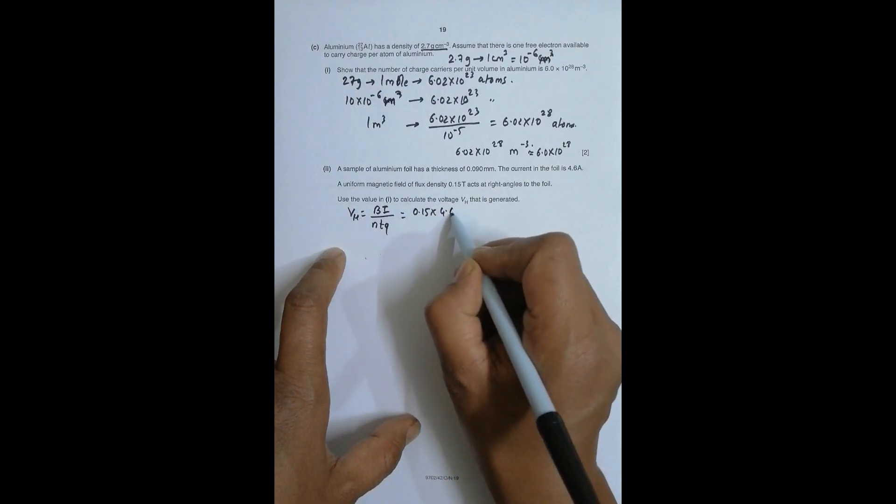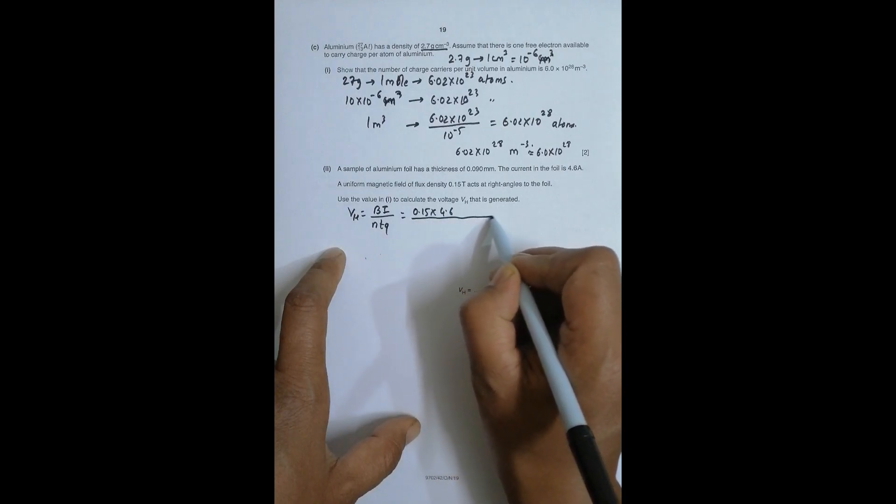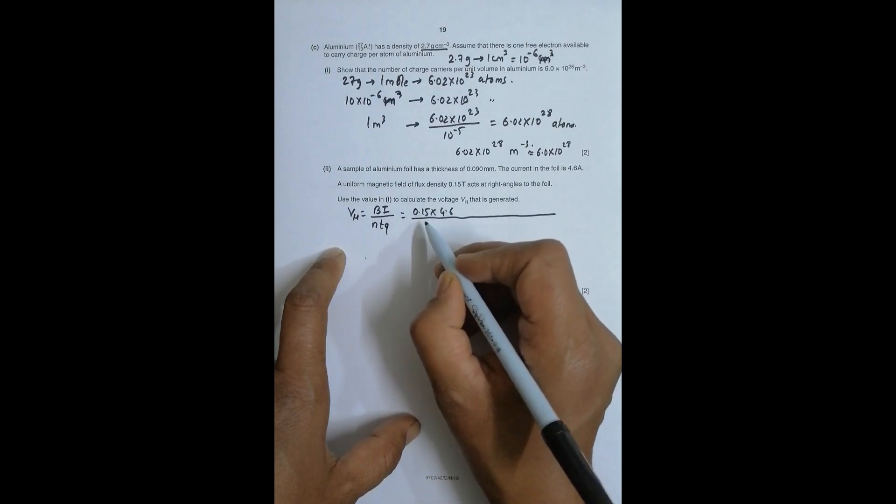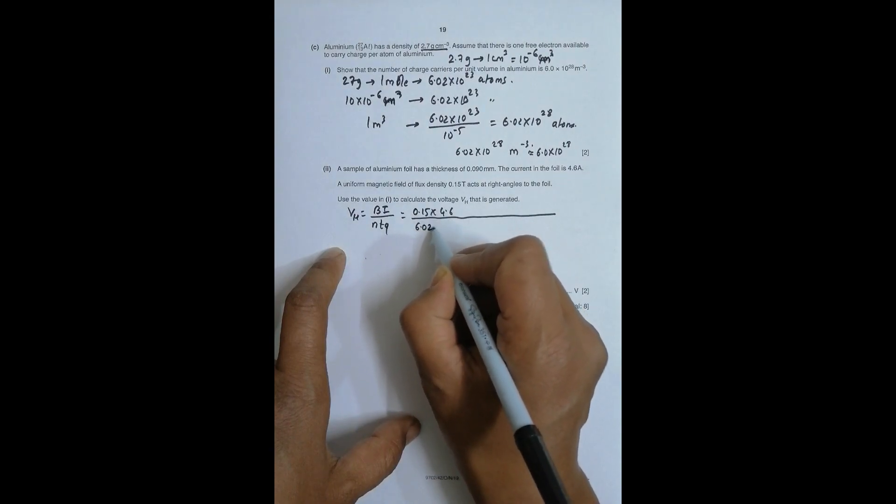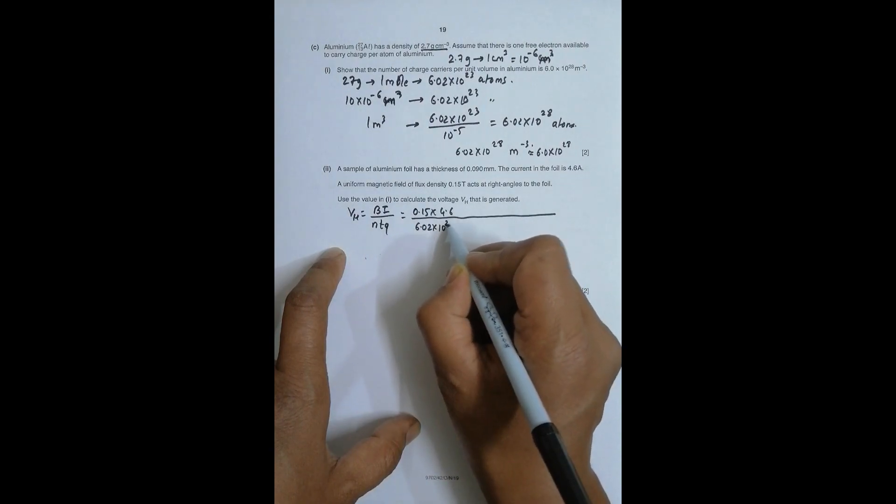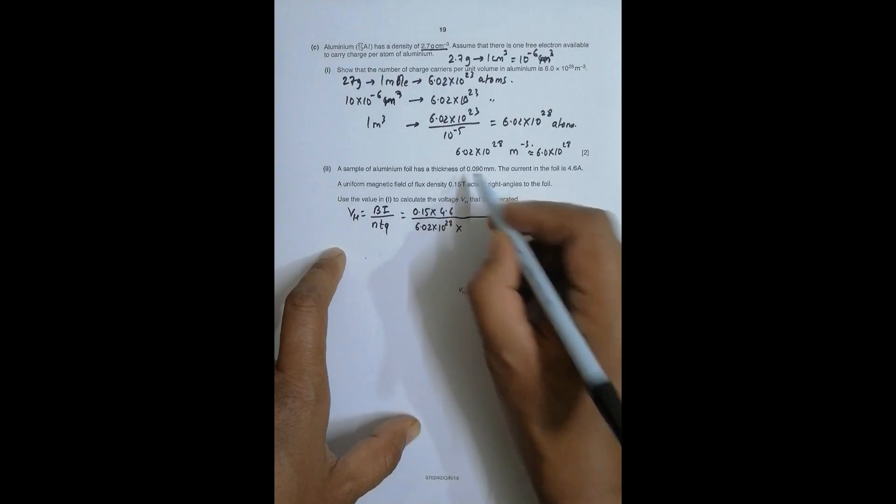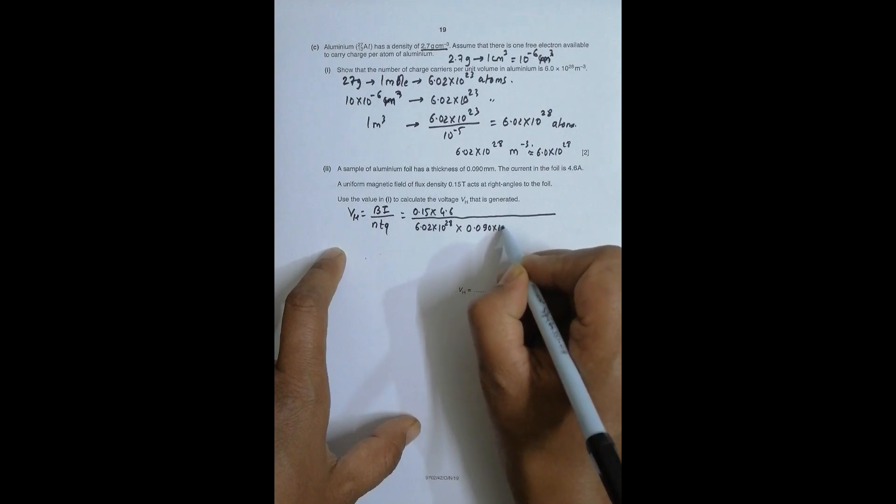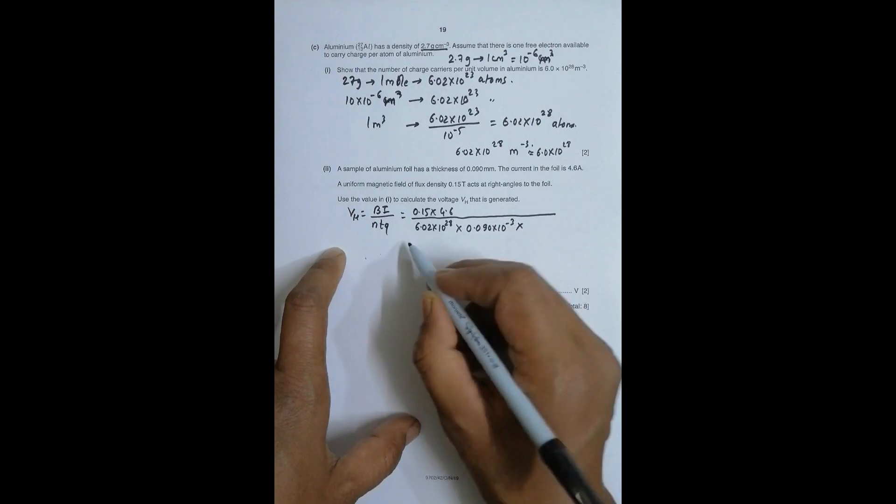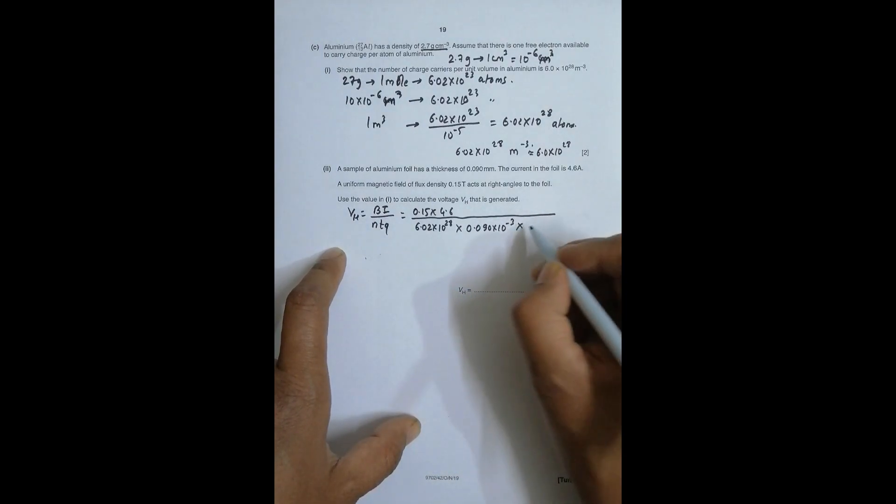That's equal to B is 0.15 times I is 4.6. Now the denominator: n equals 6.02 times 10 to power 28, times t is the thickness 0.090 times 10 to power minus 3, times q is the charge of the electron which is 1.6 times 10 to power minus 19.